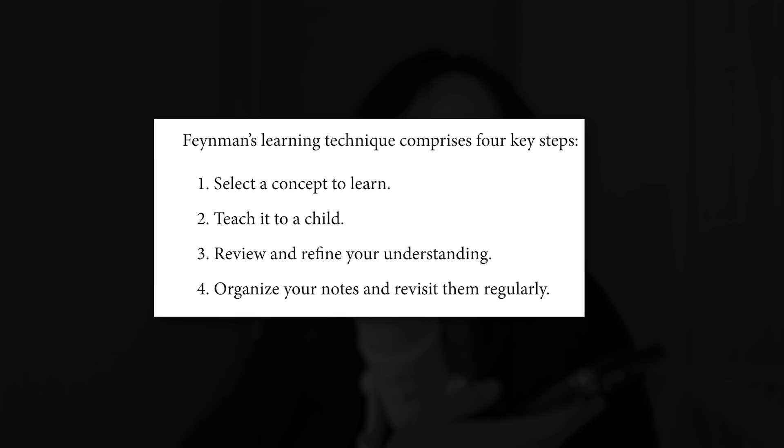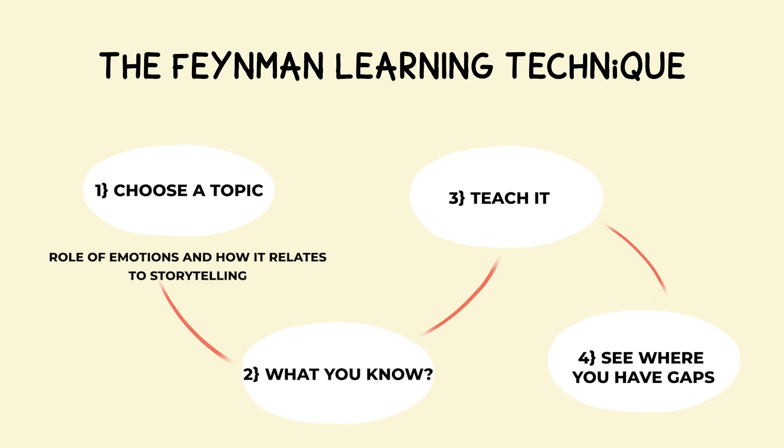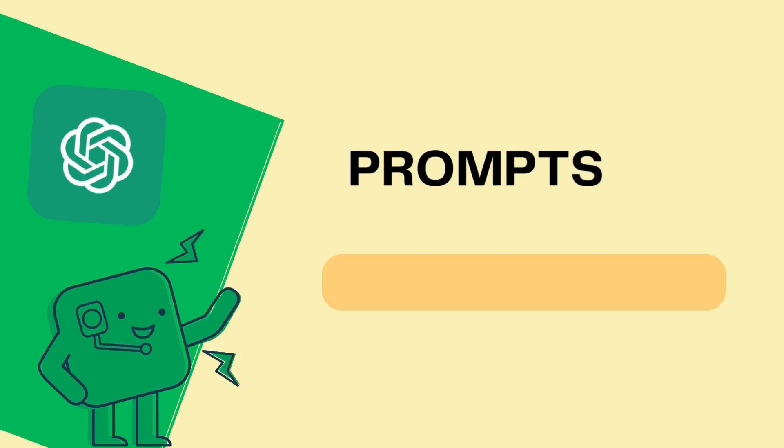I want to try using the Feynman technique with you to learn about the relationship between emotions and storytelling. So I'll choose the topic: relationship between emotions and storytelling. Next I'll write down what I know and then teach it. Finally I'll identify gaps. I'm not sure about the role of emotions in storytelling — are all emotions equivalent to each other, or are some more powerful than others? Emotions tend to have a stronger impact on audiences depending on how they're used.